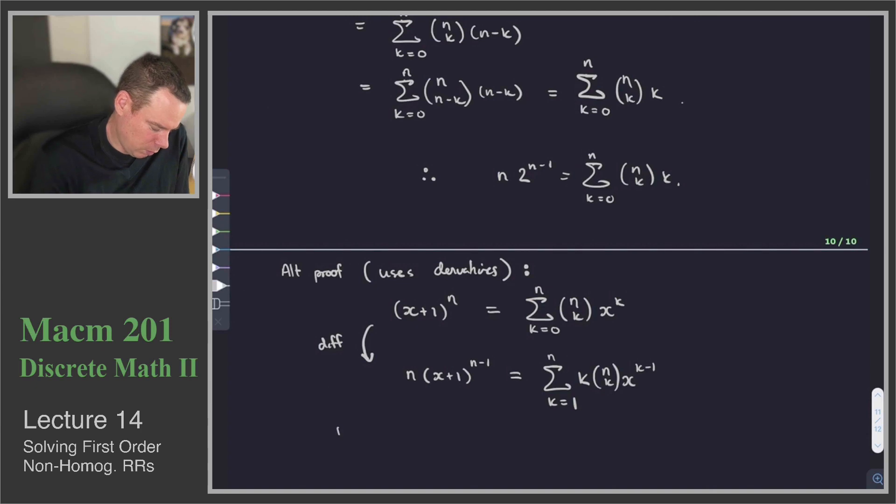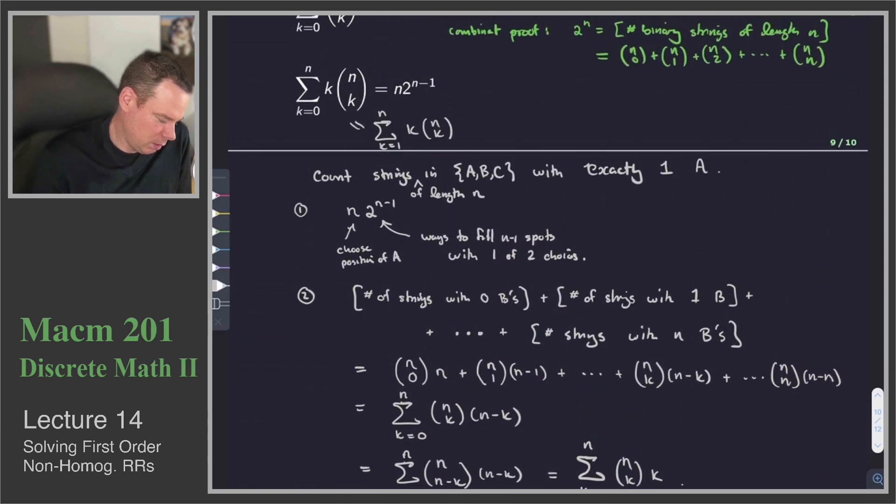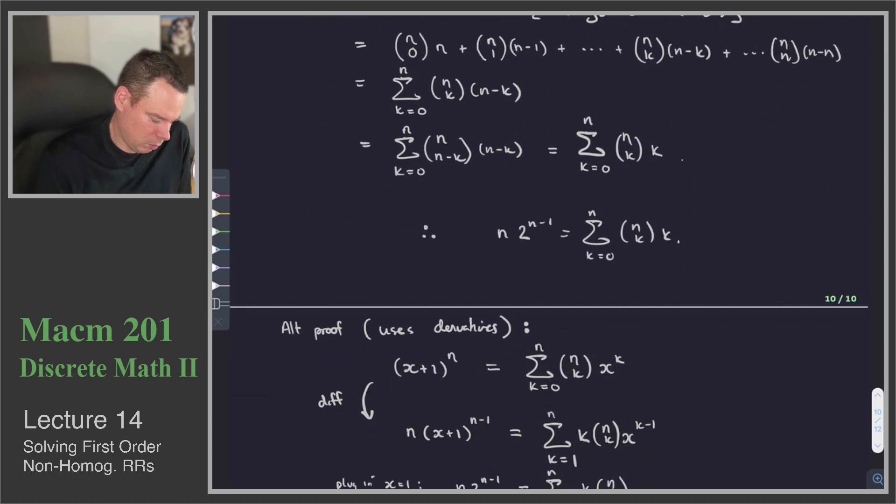Now what do we do? Now we plug in x equals 1 and we get n times 2 to the n minus 1 is equal to the sum of k equals 1 to n of k times n choose k. Based on the remarks I had up above, our sum started at 0 but the first term was just 0 anyway, so it's equivalent to starting at 1.